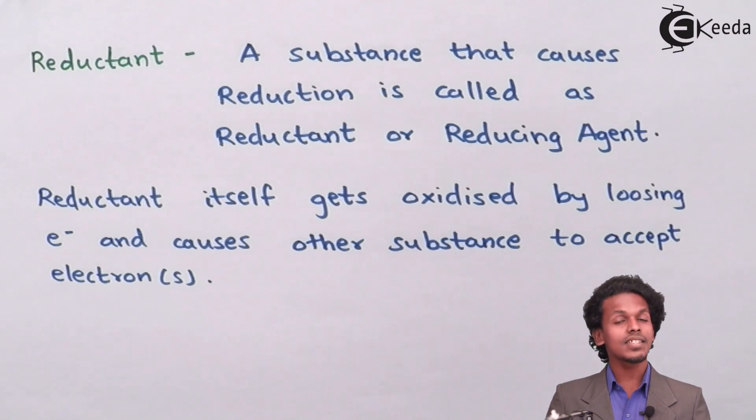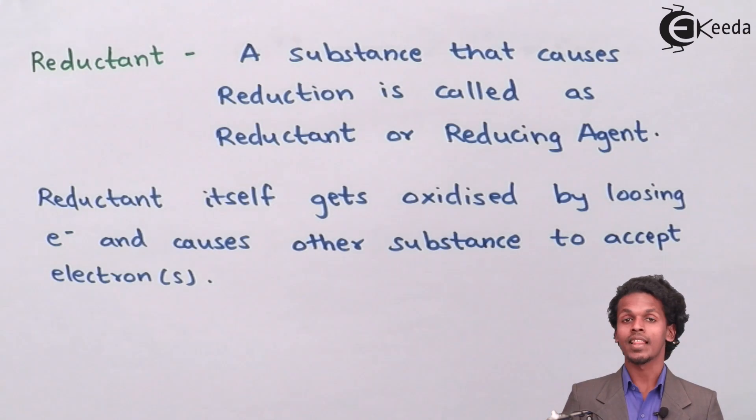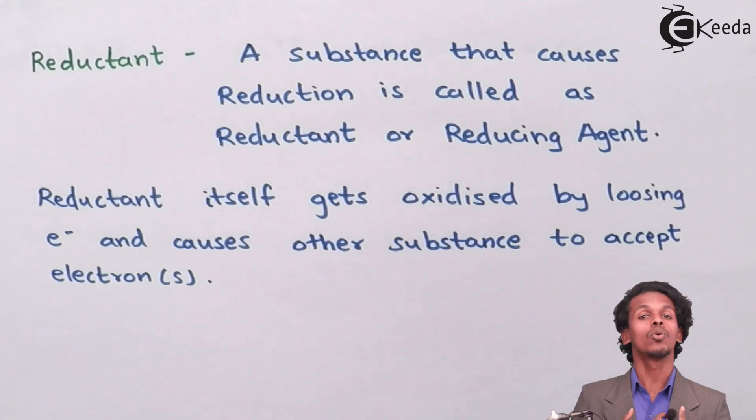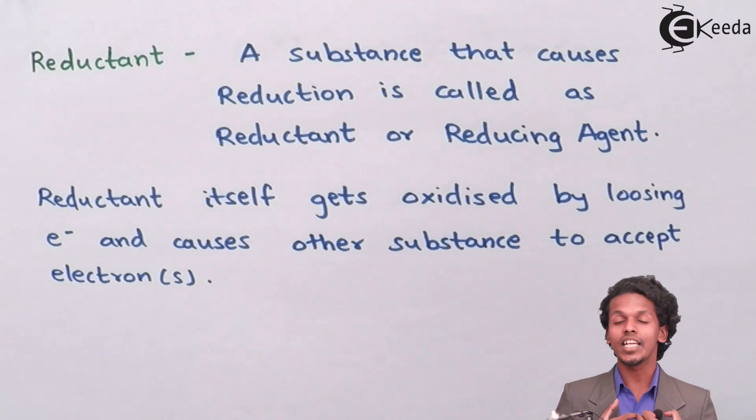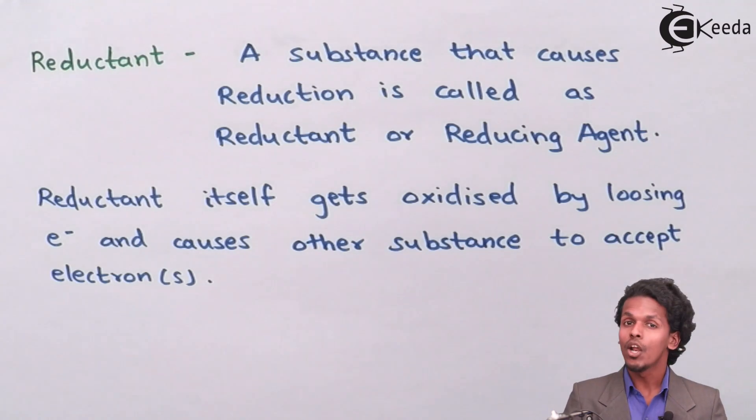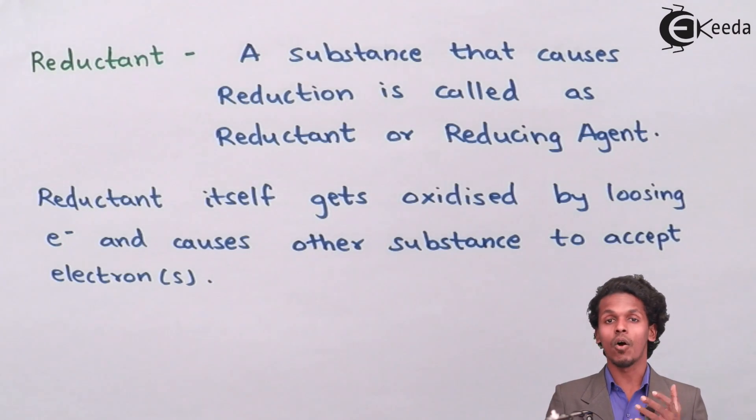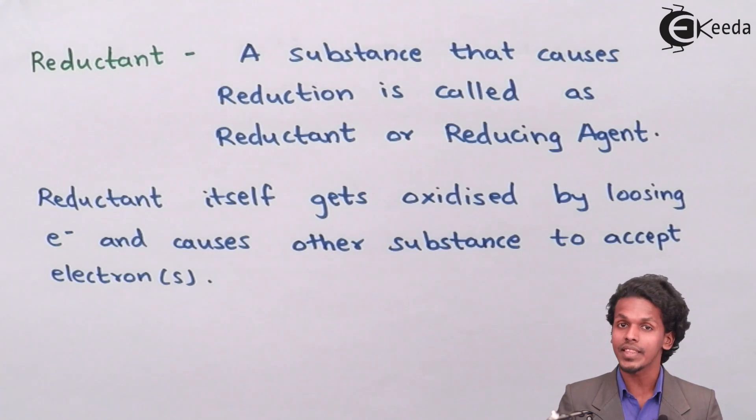Basically, reductant is the substance that loses electron. And the substance which loses electron shows oxidation process. This reductant or reducing agent itself undergoes oxidation, which means they show oxidation process by losing electron and they let the other substance to gain that electron. So this is how the reductants and oxidants are differentiated with each other.